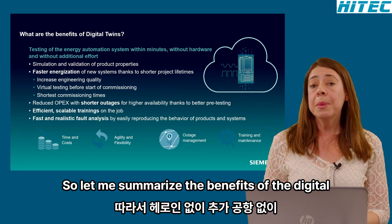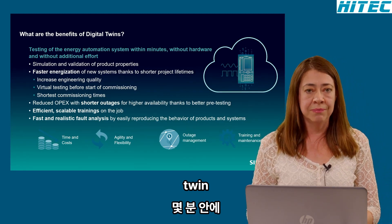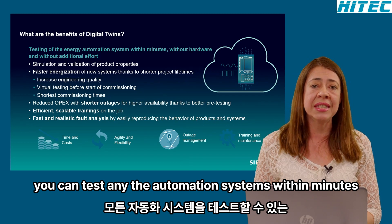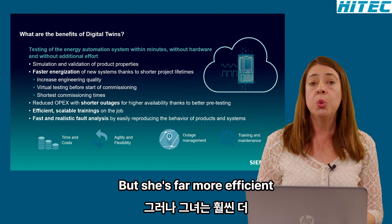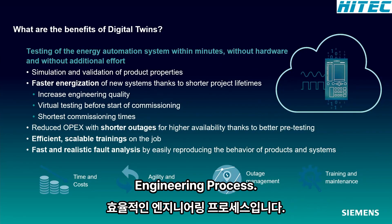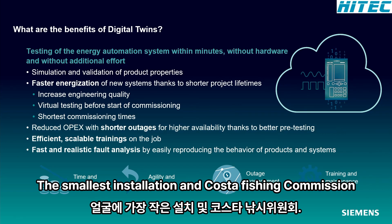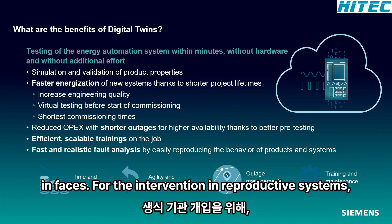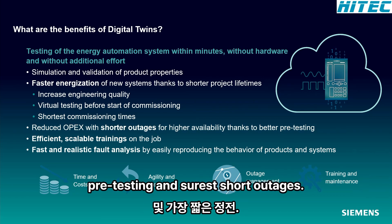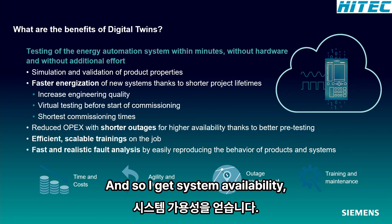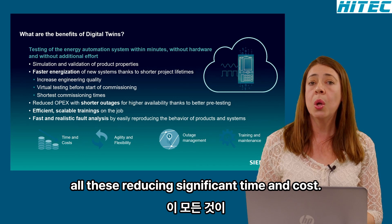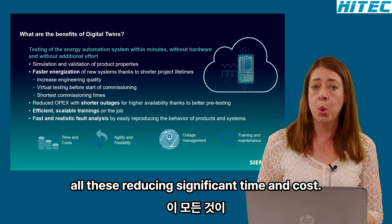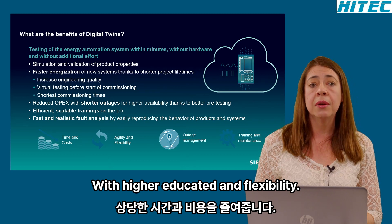The digital twin provides the environment to test devices themselves and their integration among them and with other devices and systems. To summarize the benefits: you can test energy automation systems within minutes without hardware and without additional effort. You achieve a more efficient engineering process, smooth installation, and cost-efficient commissioning phases. For intervention in operative systems, extensive pre-testing ensures short outages and higher system availability. A faster and more realistic fault analysis is granted, all while significantly reducing time and cost, with higher agility and flexibility.